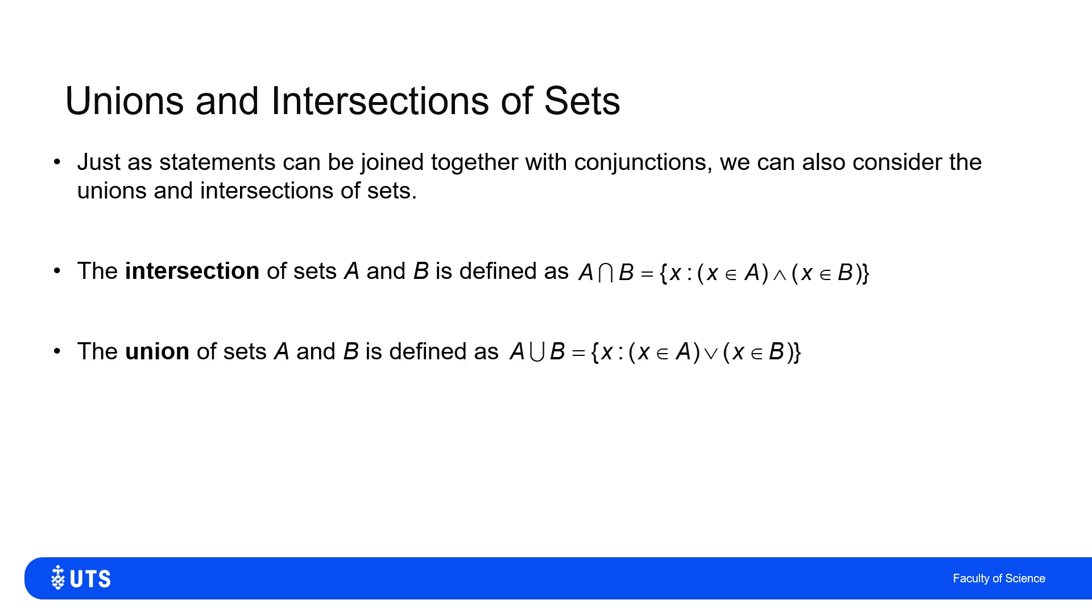Similarly, we have the union of two sets A union B, with this cup notation, A union B is all x such that x belongs to A or x belongs to B. And remember, we're talking inclusive or, so potentially both of those. And this notation is very, very similar to what we saw for logical statements. It's a rounded notation rather than the arrow head, but this idea of the similarity between the logical notation and the set notation.